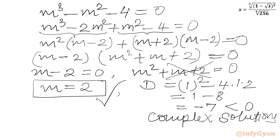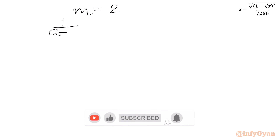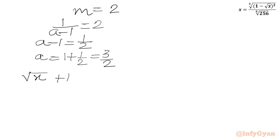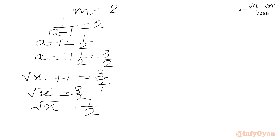Now m was our substitution. Putting back m equal to 2: 1/(a minus 1) equal to 2. Taking the reciprocal of both sides, a minus 1 equals 1/2. Adding 1 to both sides, a equals 3/2. Since a was our substitution for square root x plus 1, we have square root x plus 1 equal to 3/2. Subtracting 1 from both sides, square root x equals 1/2. Squaring both sides, x equals 1/4.